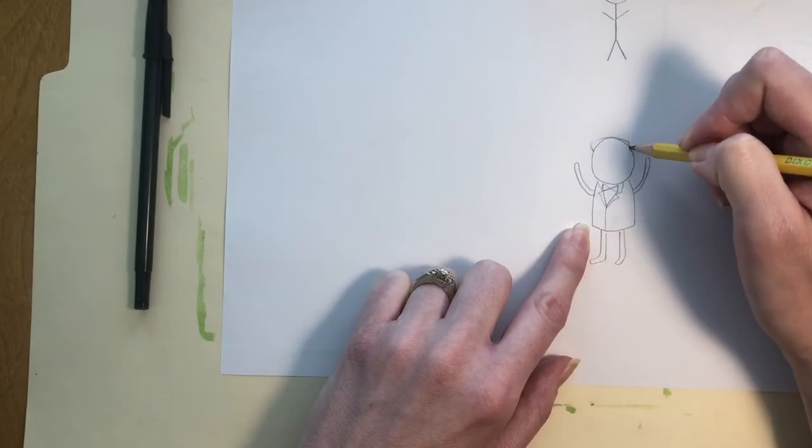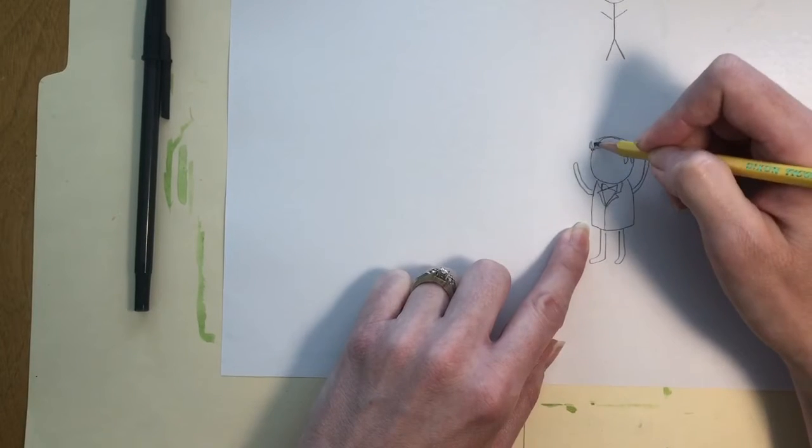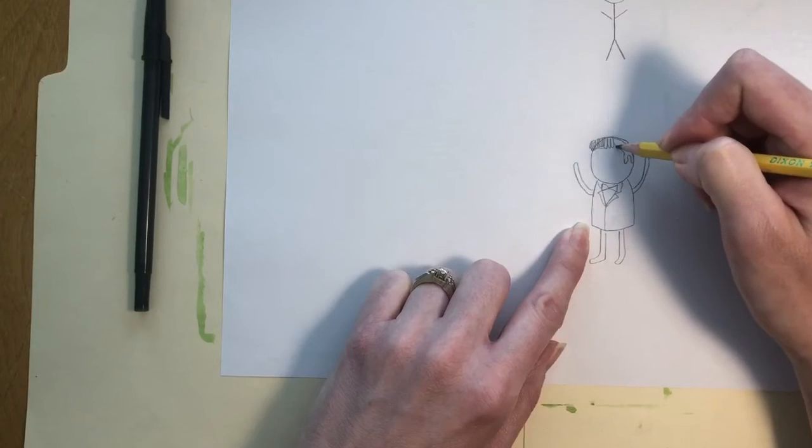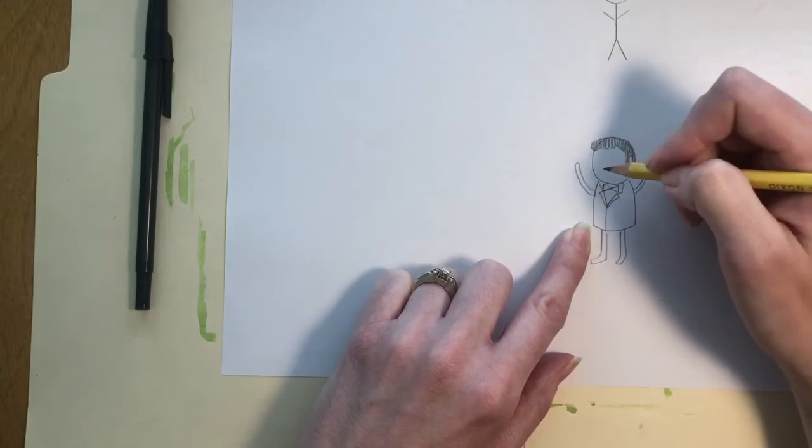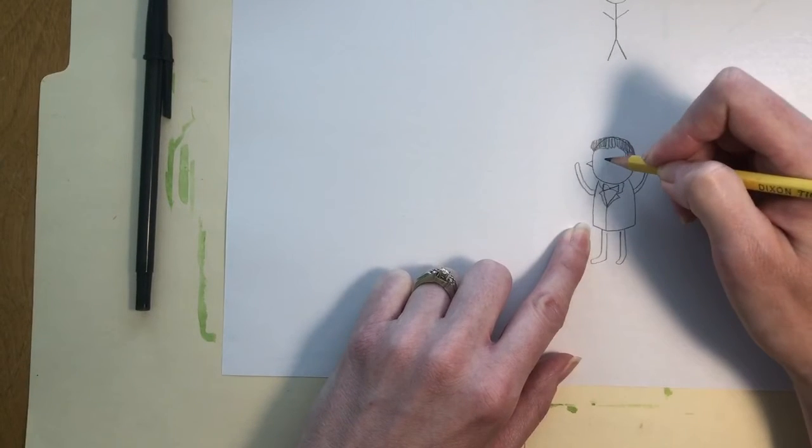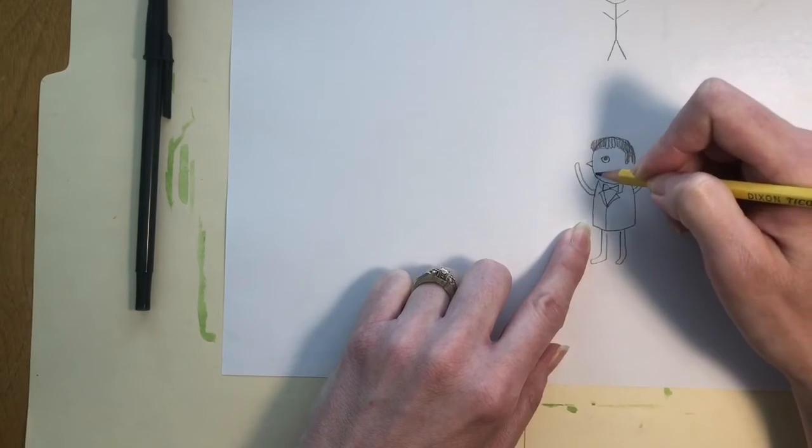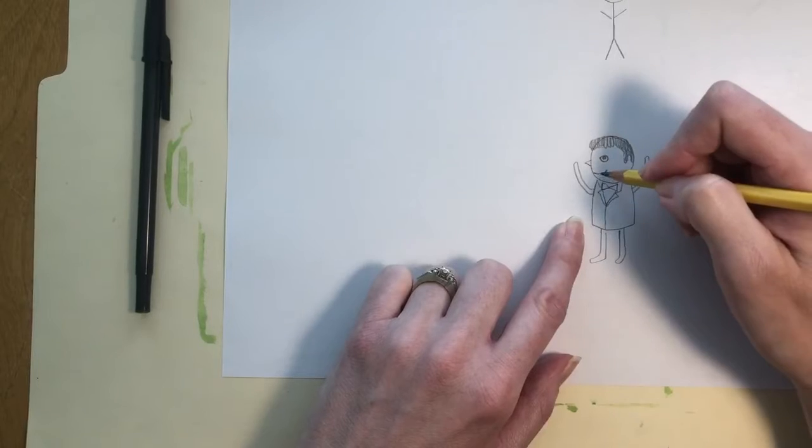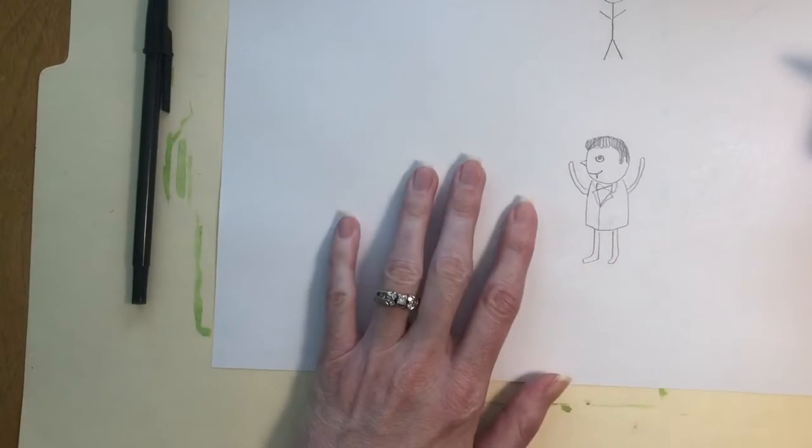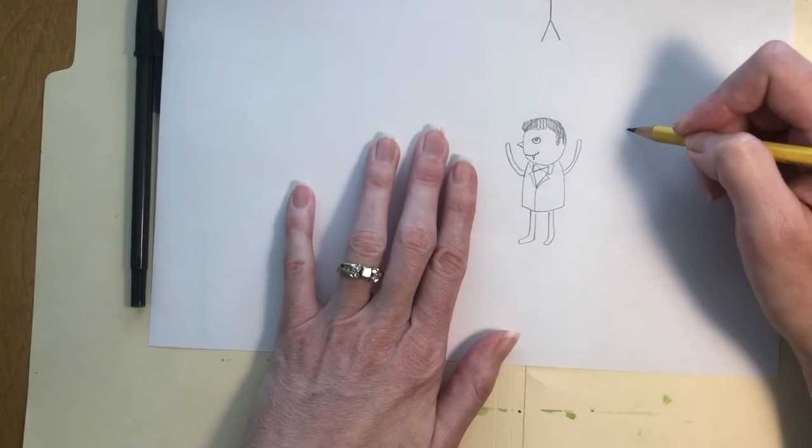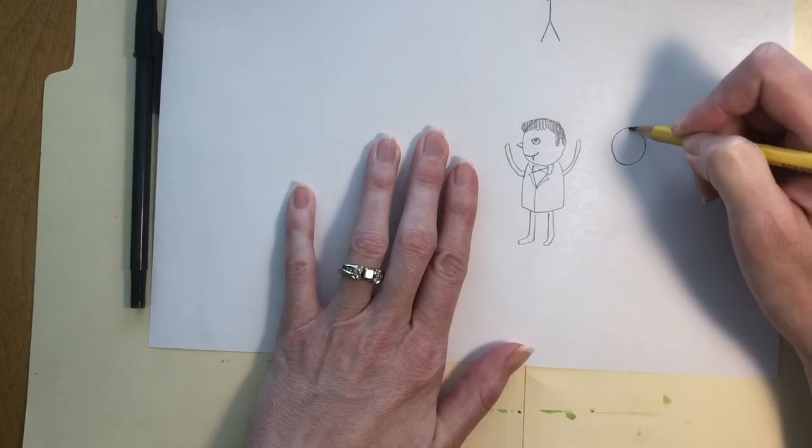And you can put hair and a nose and some eyes and a mouth. You know, he kind of looks like Dracula, let's just give him fangs. There we go.